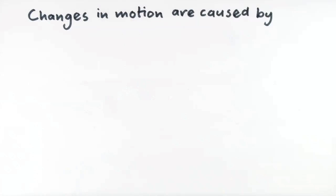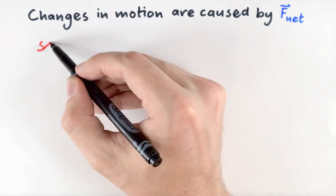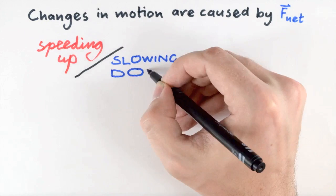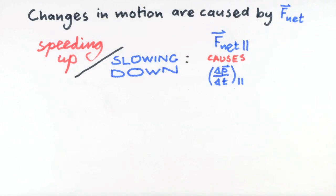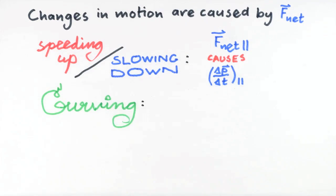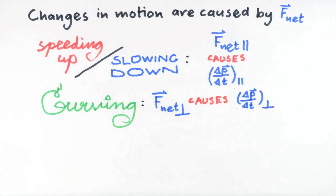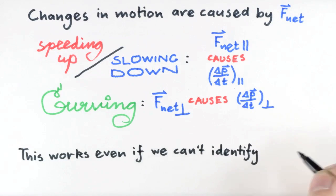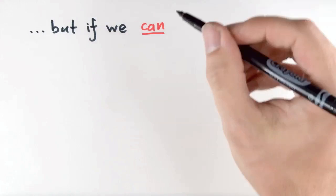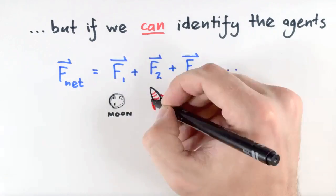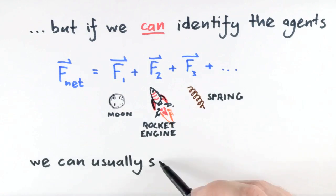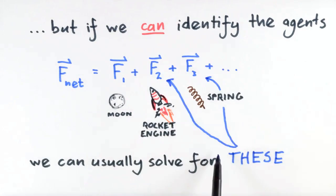Newton's Second Law tells us the total interactions are the cause. If the system is speeding up or slowing down, there must be non-zero total interactions causing that. And if there's curving to the system's trajectory, there must be non-zero total interactions causing that. Observations of the system's motion tell us all this, even when we don't know what agents in the surroundings are doing the pushing and pulling. However, if we can identify these agents, then often we can solve for one or more of the forces associated with them.